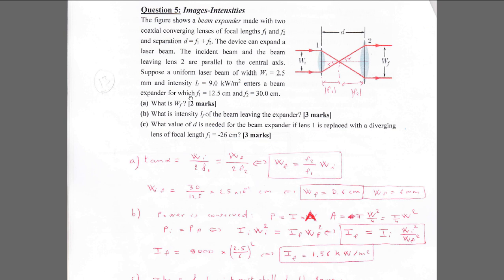They give you the beam width, intensity in power per square meter, f1 and f2. To find wf, notice that what links wi and wf is pure geometry — these two triangles are similar.